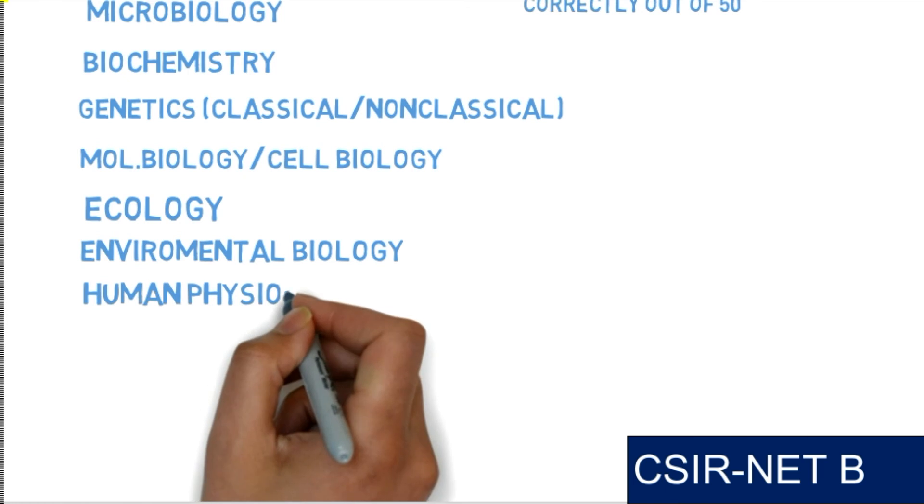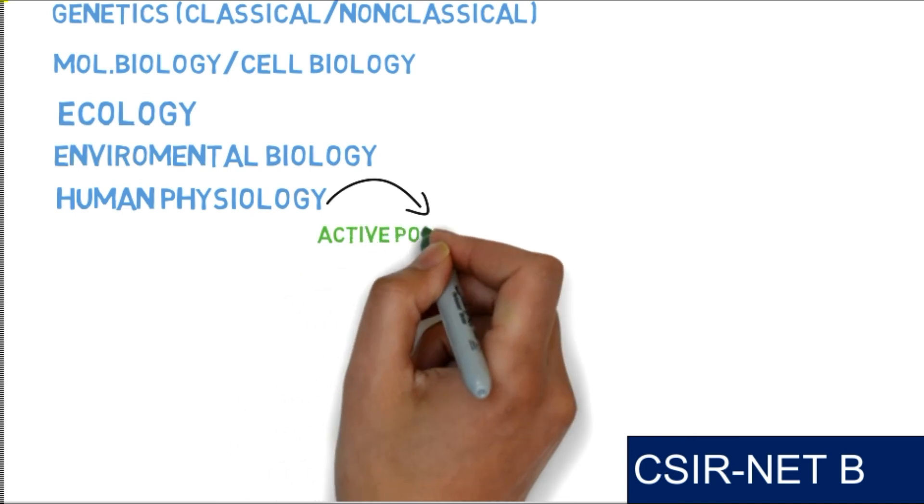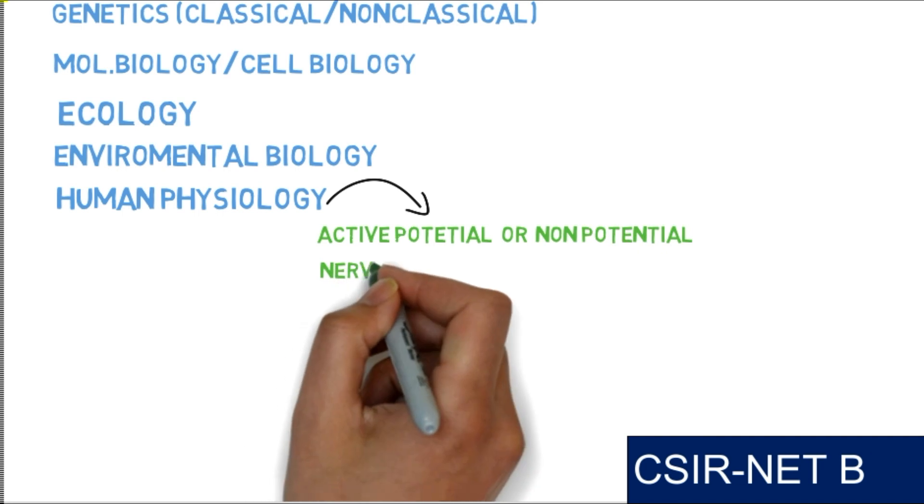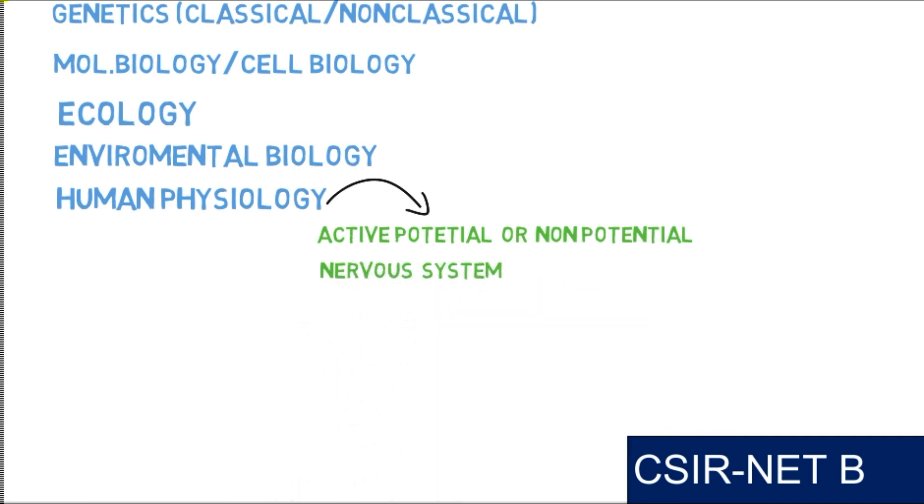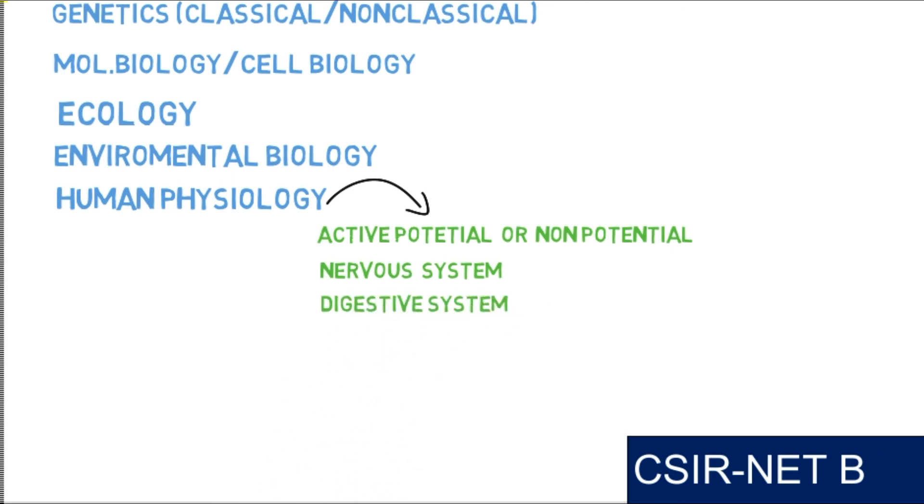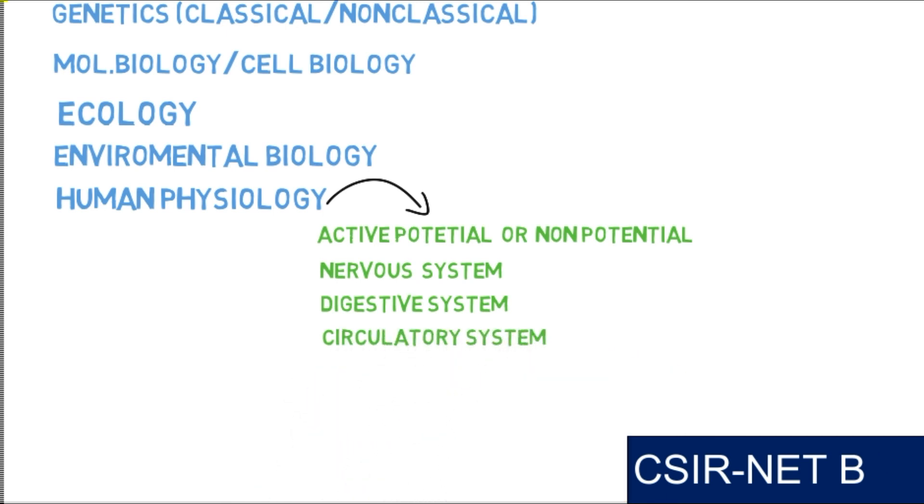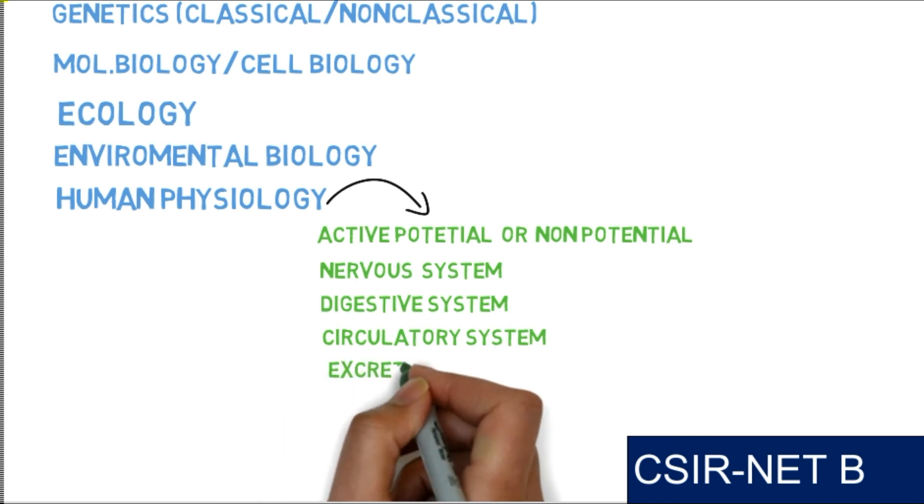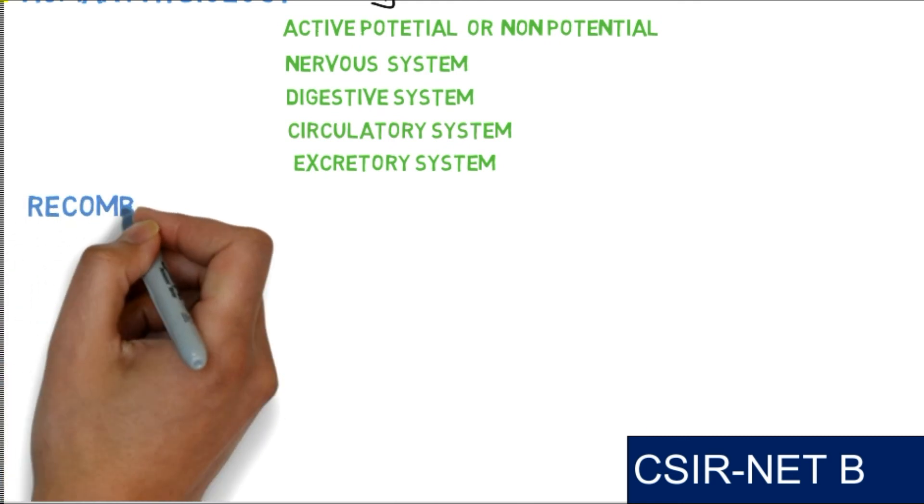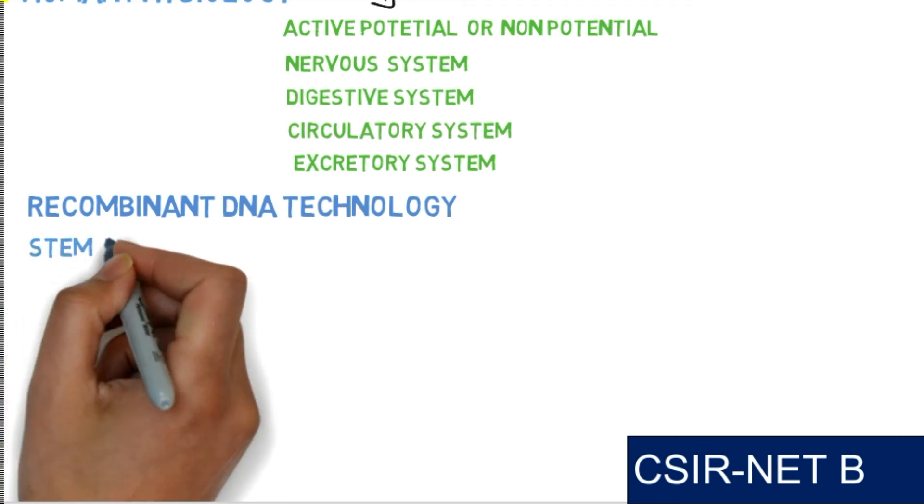You have to cover human physiology. In the human physiology section, some topics that are repeatedly asked include action potential or non-potential, nervous system, and some systems of our human physiology - digestive system, circulatory system, and excretory system. You have to cover the whole system.